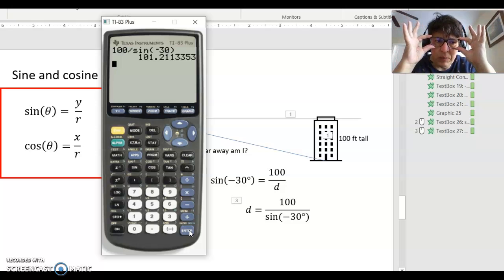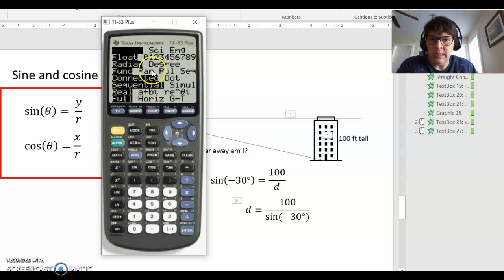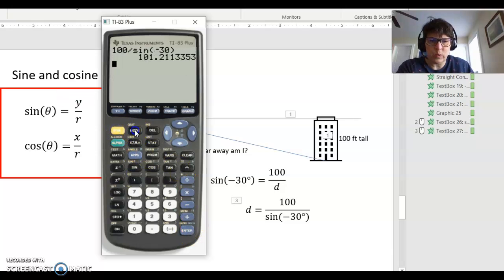Now I need to point something out. You might have a different answer. Remember how angles could be measured in either degrees or in radians? Well, sine can be in degrees or radians. So we go to mode and see what we've got. Right here, mine is in radians. I don't have 30 radians. I have 30 degrees. So I hit enter to turn degrees on and I'll quit. So 100 divided by sine of negative 30 gives me a negative 200.